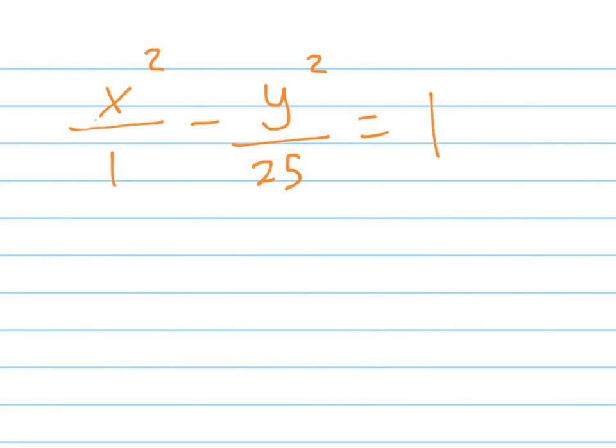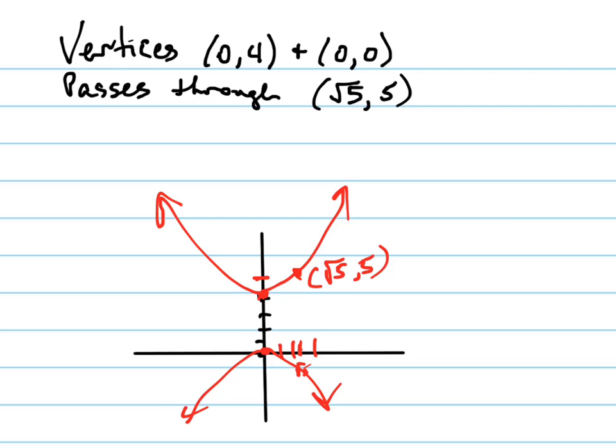So what do I have already? I have already the center. The center is going to be right in the center of the two vertices. So there's my center, (0,2) is the center. So this is h and k right there.